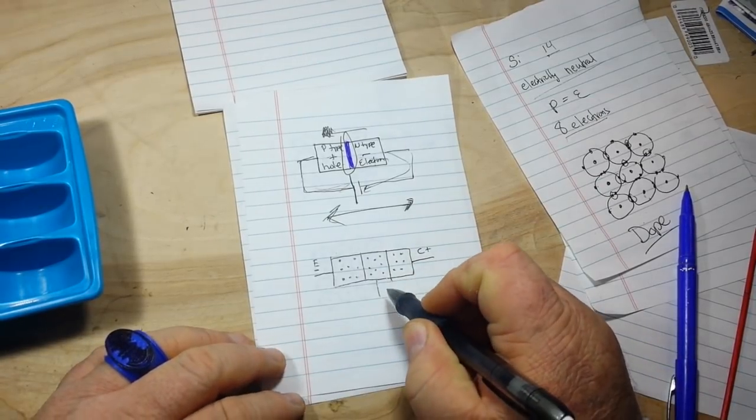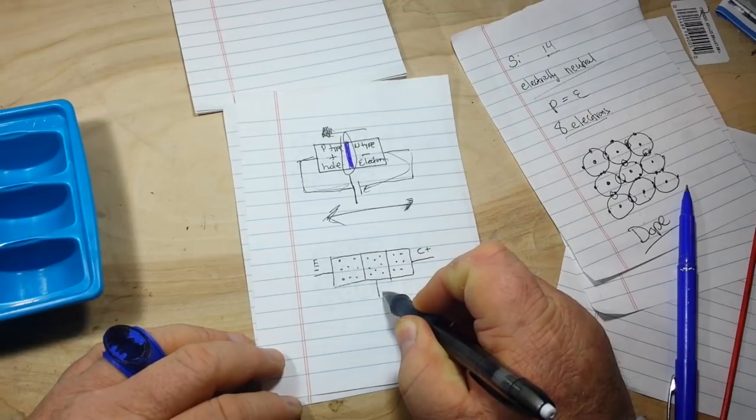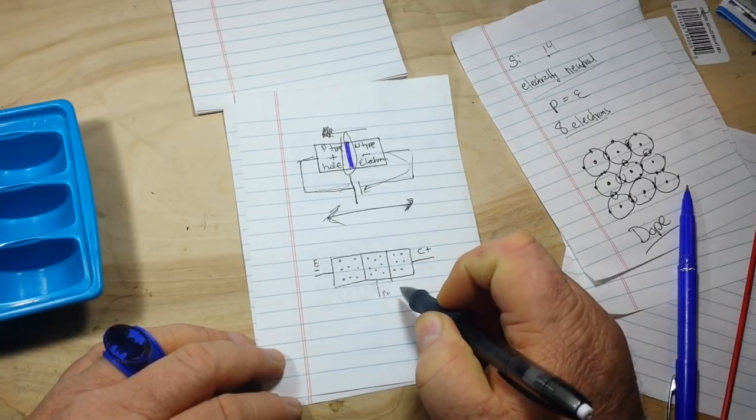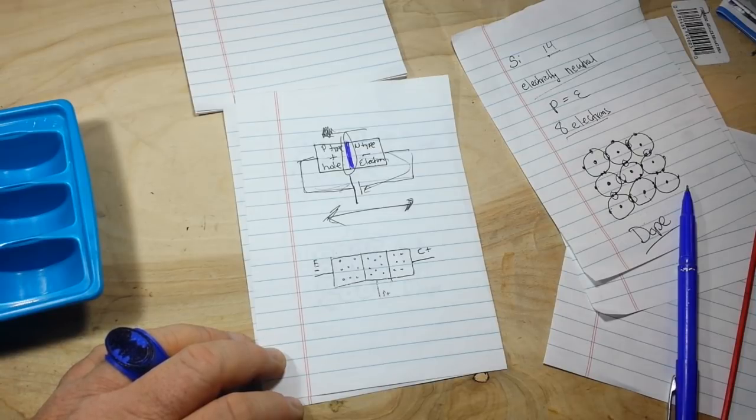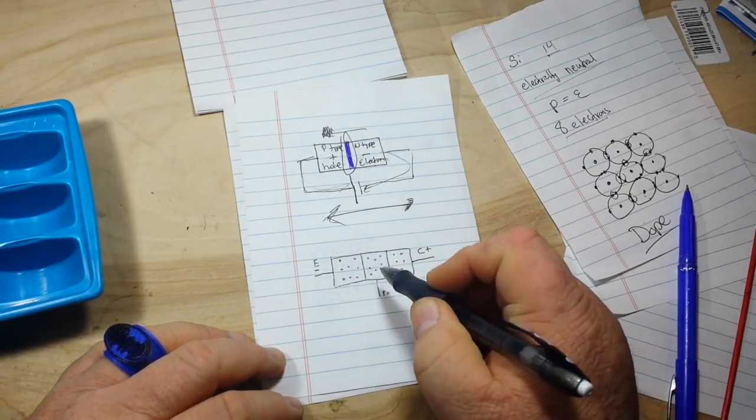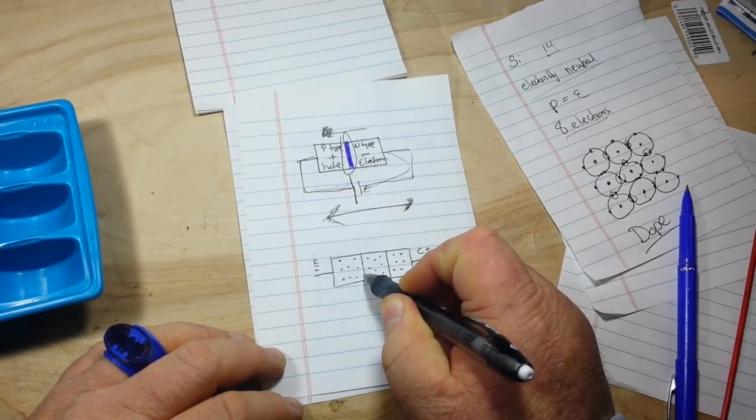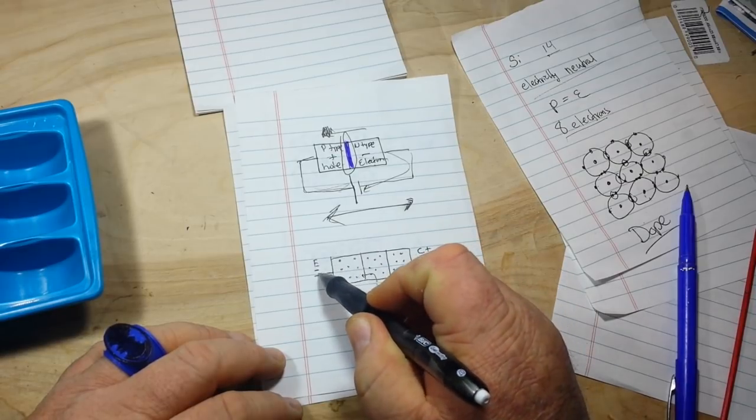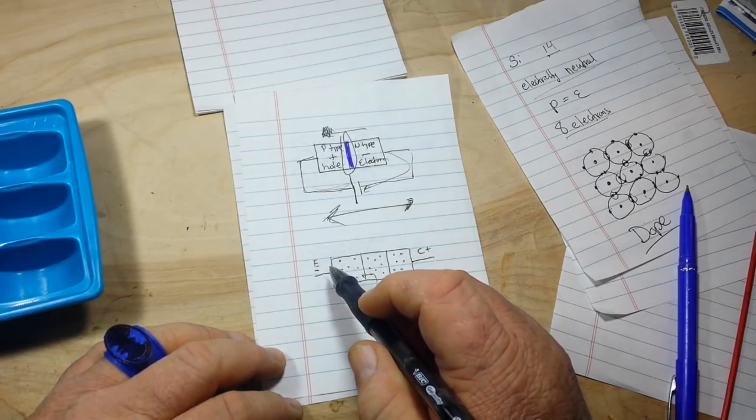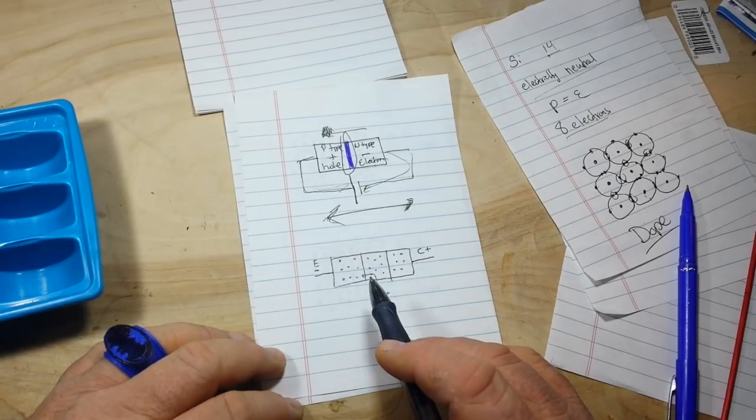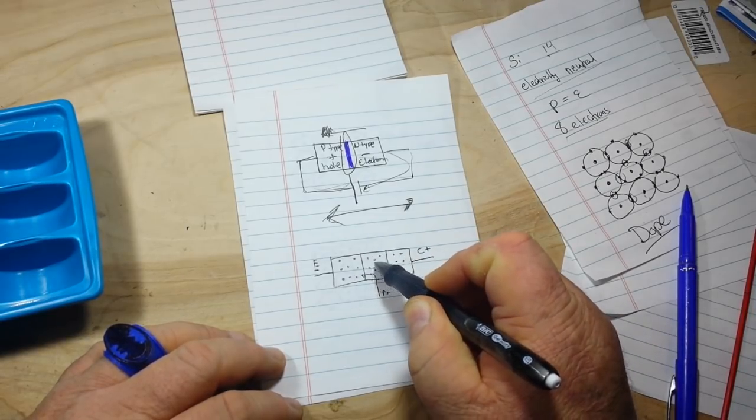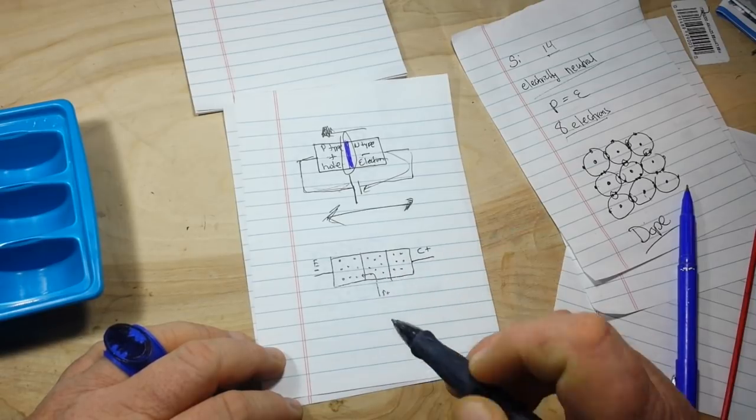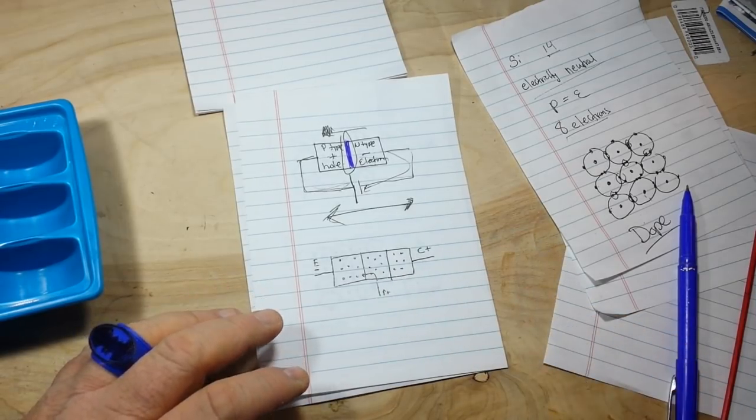So if we attach a small positive charge to the base, what's going to happen? Well, it's going to make the emitter negatively charged and it's going to pull electrons from the emitter into the base. That's electron flow.